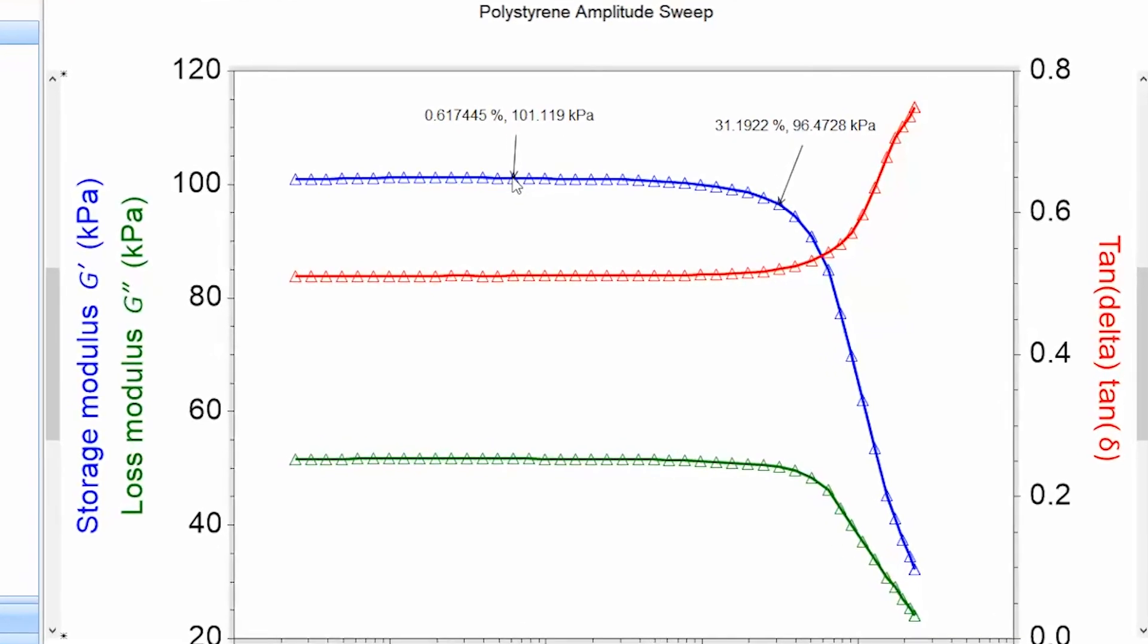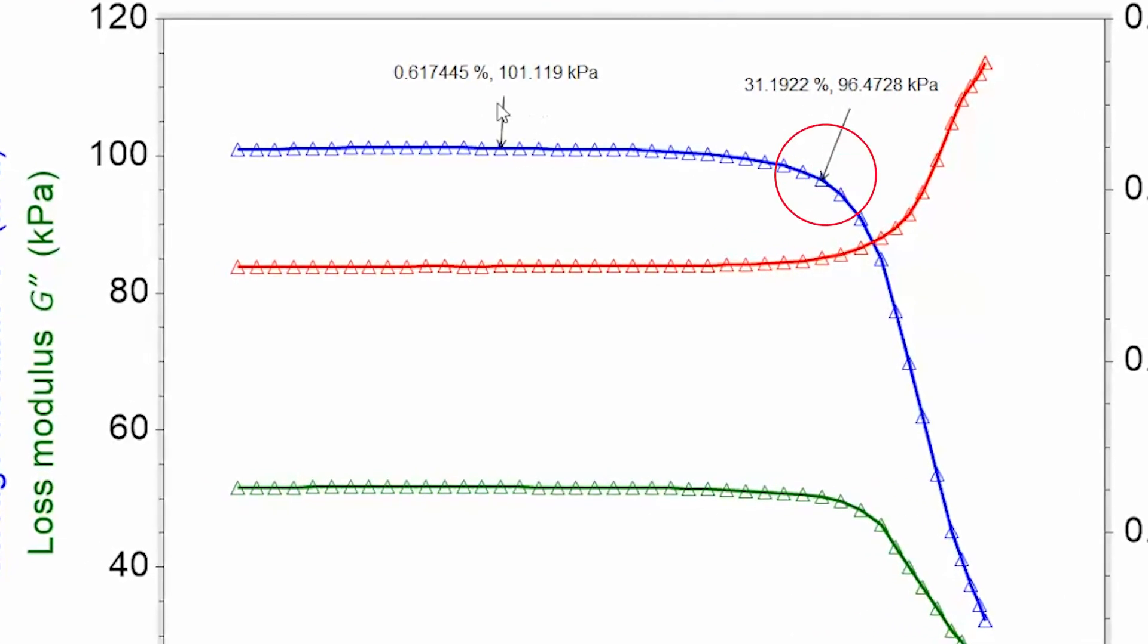One typical definition for the critical strain is the point at which the storage modulus drops by 5% from the plateau value.